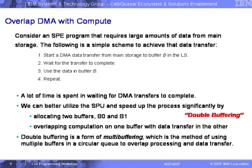Now, double buffering. Building on the DMA list technique, we have another technique to overlap DMA transfer with computation. This is a standard technique, not a new IBM invention — used on other architectures too. The key is to start a DMA list transfer and overlap it with computation operating on the previous chunk of data. From the second chunk onward, while waiting for the next DMA to complete, you work on the data already fetched.